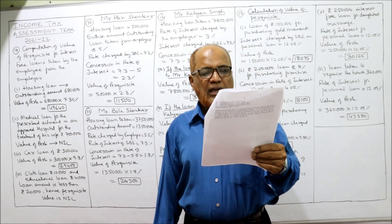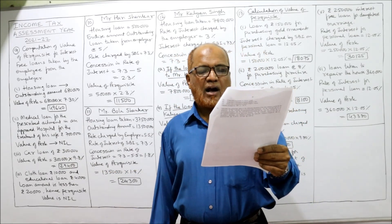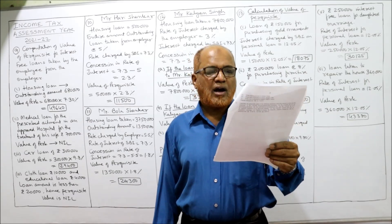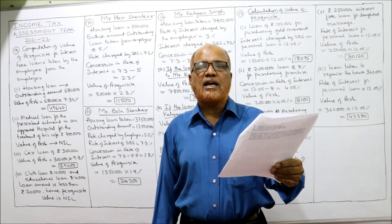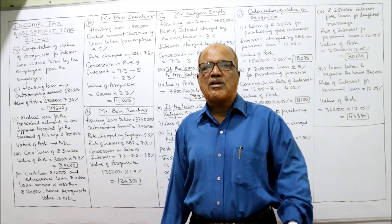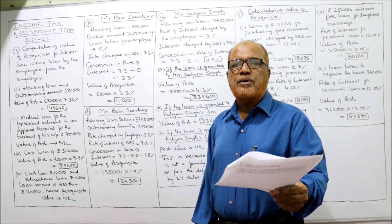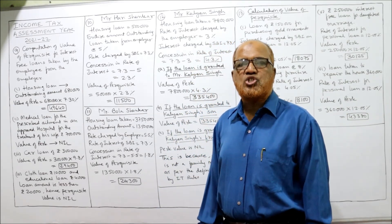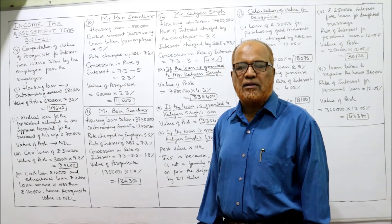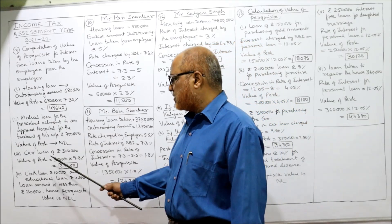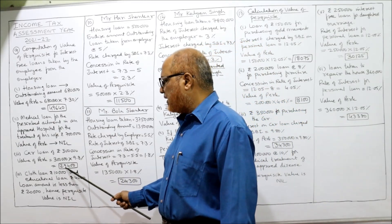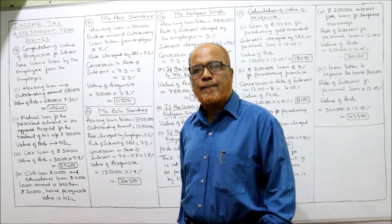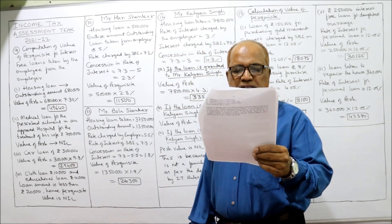Case 3: he availed a car loan of ₹3 lakh. For car loan, the rate of interest is 9.8% as given in the problem. So value of perquisite = 3 lakh × 9.8% = ₹29,400.